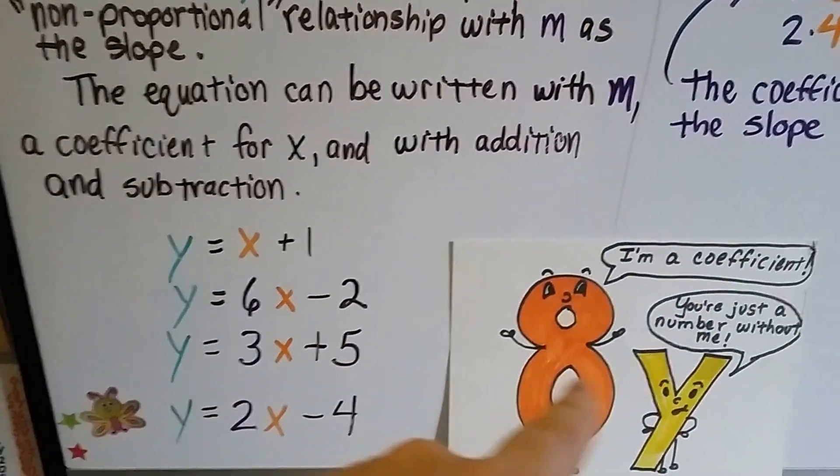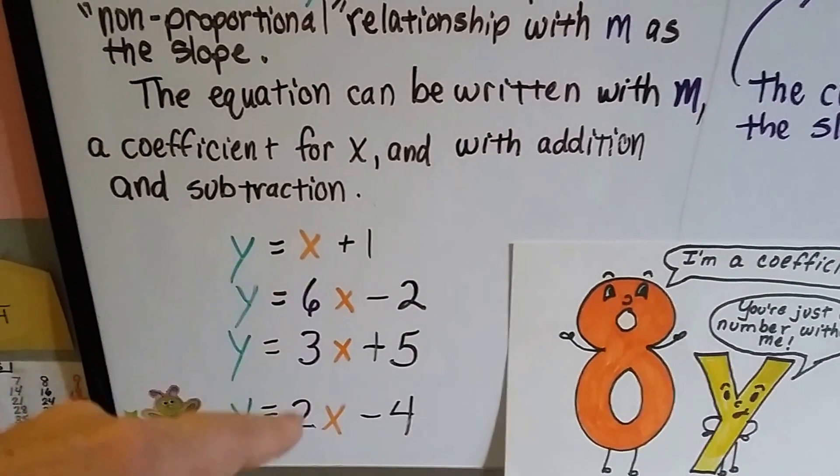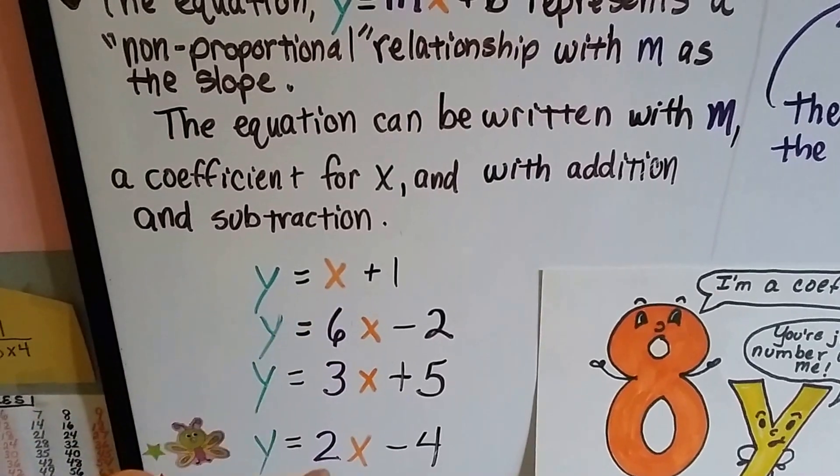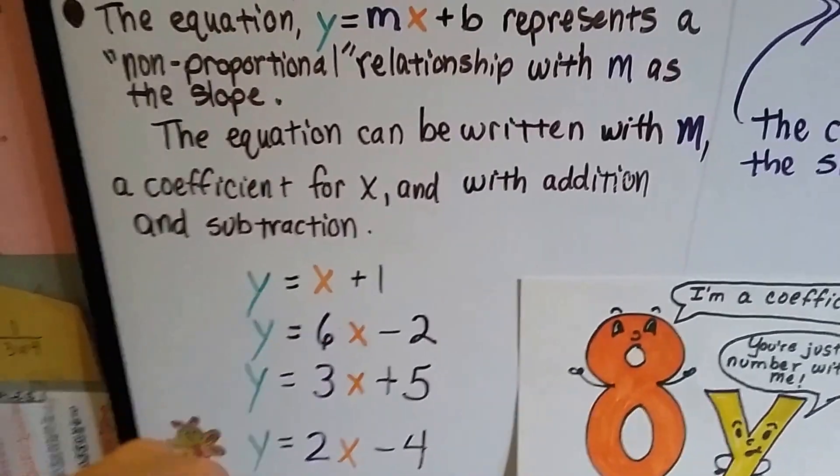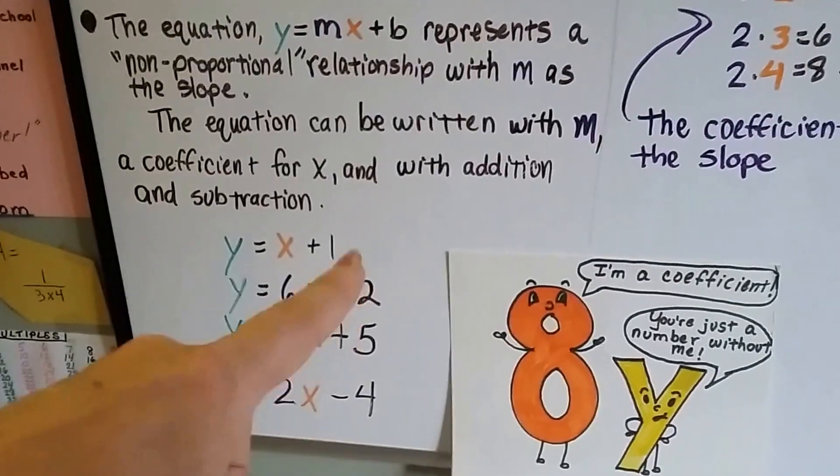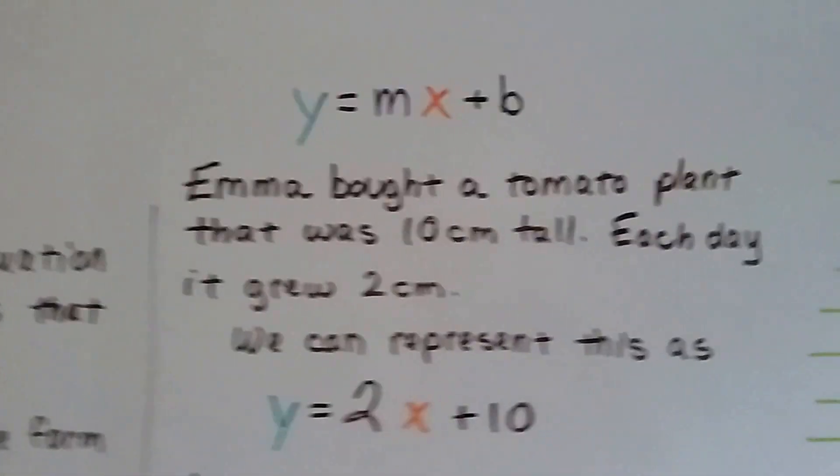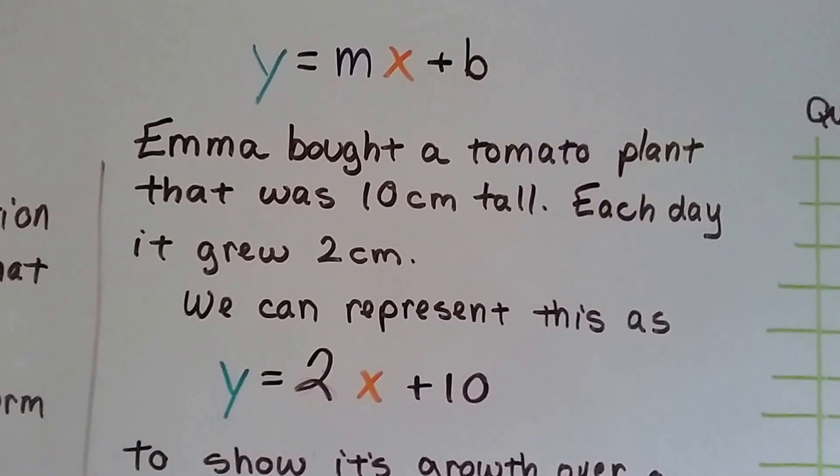Remember what a coefficient is? It's the number in front of a variable. The 6, 3, and 2 would be the m part of the equation. That's the coefficient for x. We can have either addition or subtraction behind the x. So here's our equation y equals mx plus b.